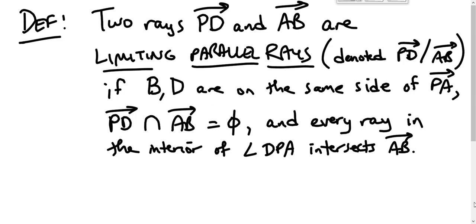This is what we mean by limiting parallels. Two rays, PD and AB, are limiting parallel rays and we denote that by saying ray PD is a limiting parallel to ray AB. This is half of the parallel symbol and that almost makes sense because we're making the parallel sign but only one of the two lines. PD and AB are limiting parallel rays if B and D are on the same side of ray PA, ray PD does not intersect ray AB, and every ray in the interior of angle DPA does intersect ray AB.